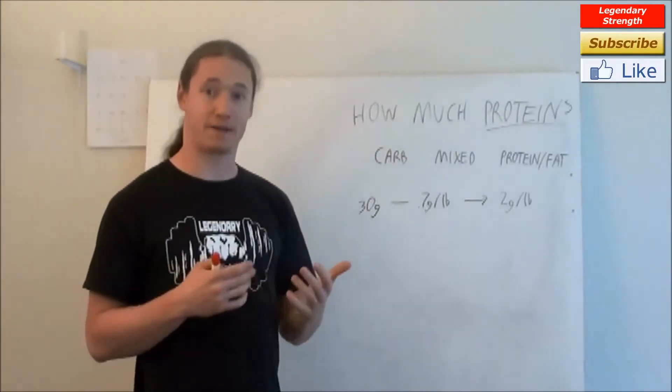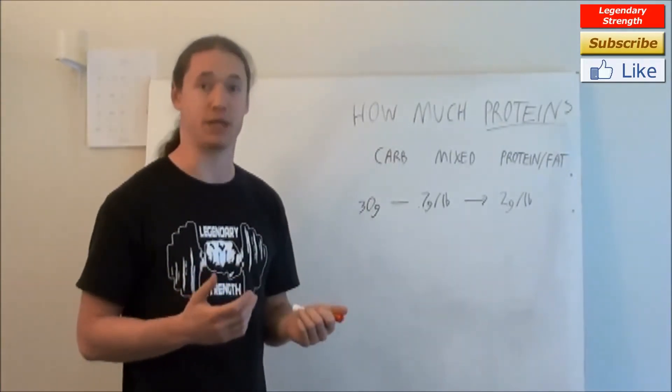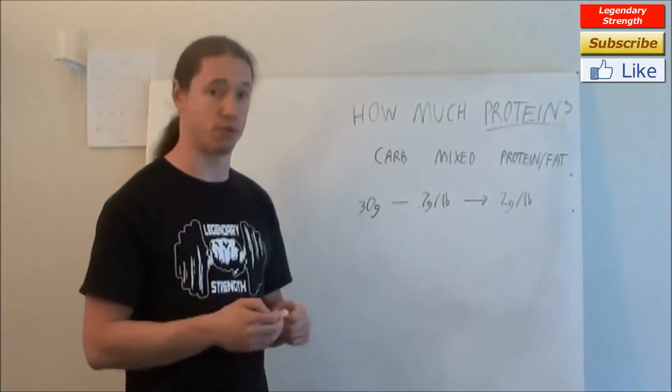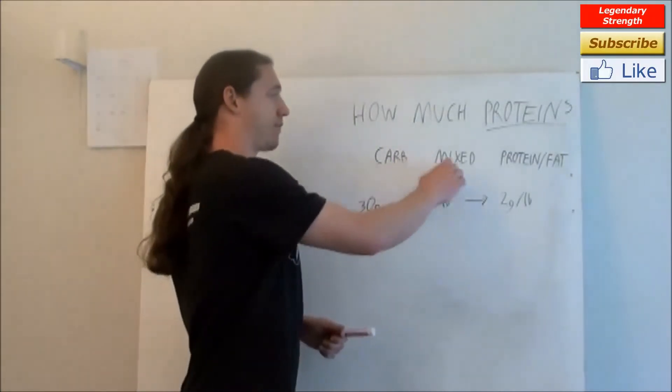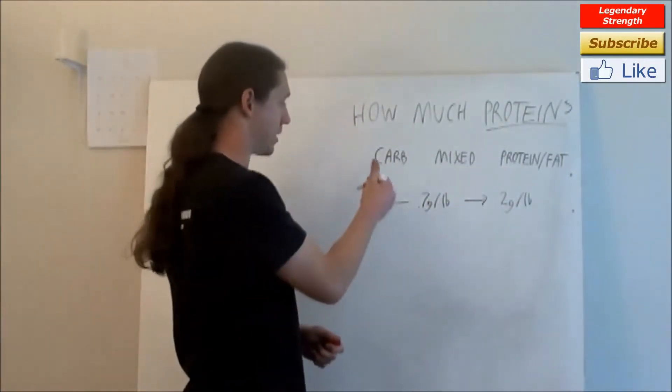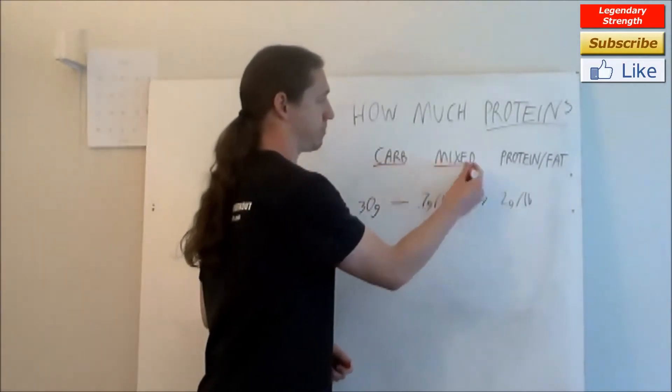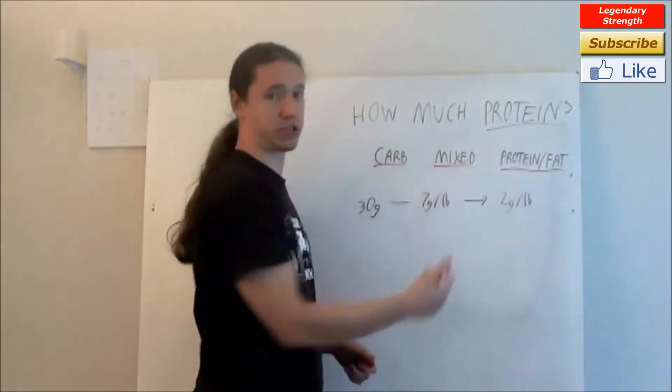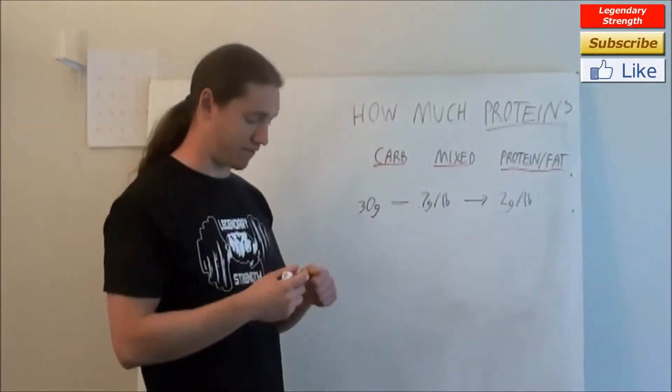Now if you look at the Metabolic Typing Diet at all, this is a useful starting point for most people. They have three different types of people: the carb people, the mixed people, and the protein, usually it's called protein, but I'm going to say protein fat people.